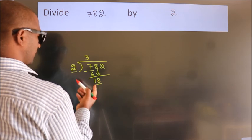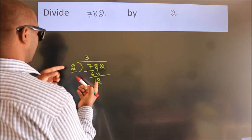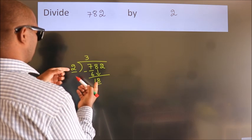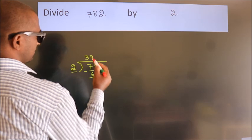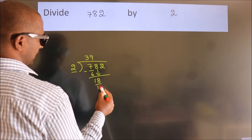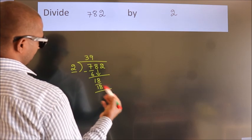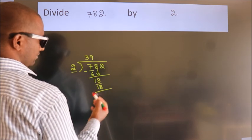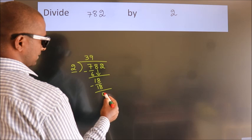When do we get 18 in the 2 times table? 2 nines — 18. Now we subtract and we get 0.